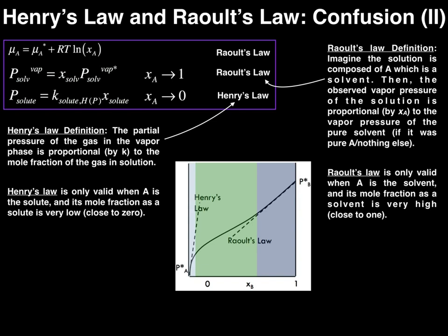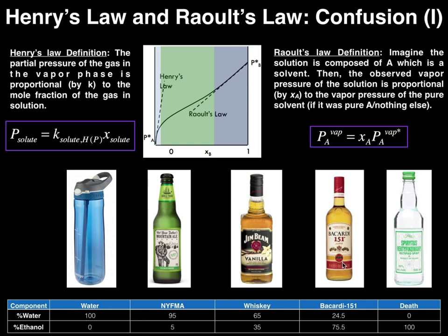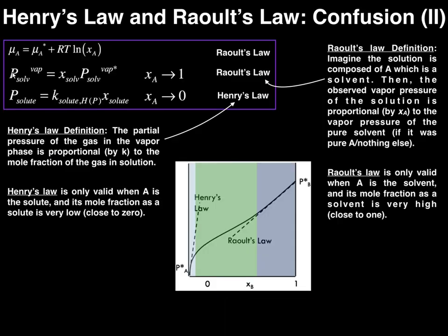Henry's Law is pretty straightforward in this form: we have the vapor pressure of the solute A equals the Henry's Law constant times the mole fraction of that solute A. Now for Raoult's Law, we already introduced this formula but we also have another equation that illustrates a similar thing. The one we're used to dealing with is the vapor pressure of A assuming it's the solvent — so now we have mostly ethanol, this is like our Bacardi 151. The vapor pressure of that ethanol equals the mole fraction of that solvent ethanol times the vapor pressure of pure ethanol. That's what we talked about being Raoult's Law.